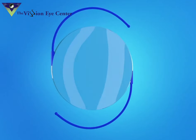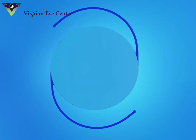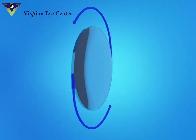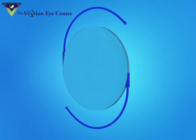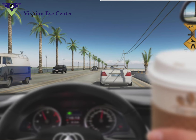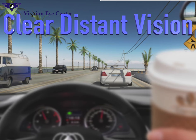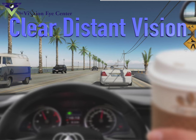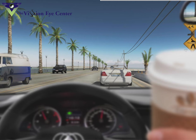The monofocal lens is a type of intraocular lens that is designed to give you clear vision at only one general distance. Many people prefer using a monofocal lens for clear distant vision, which allows you to do things like driving without needing glasses. However, with a monofocal lens set for distant vision, you are likely going to need glasses for reading or close work.